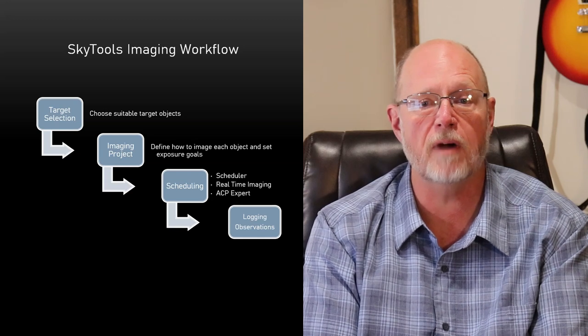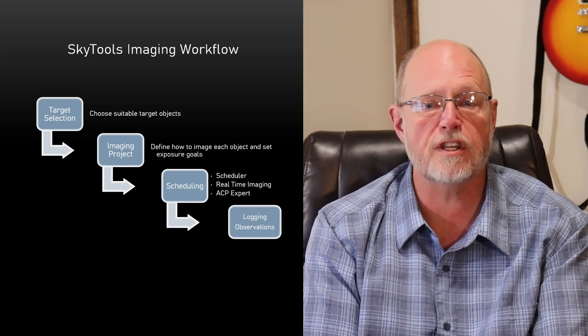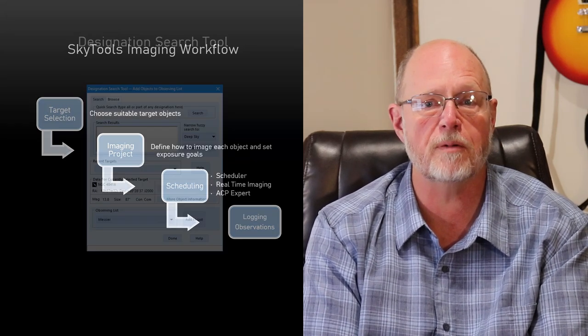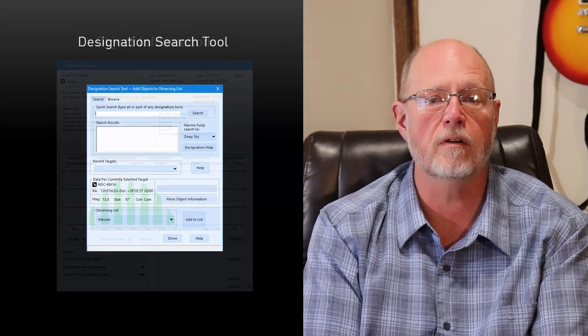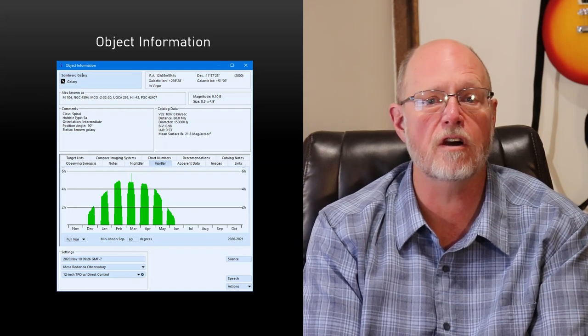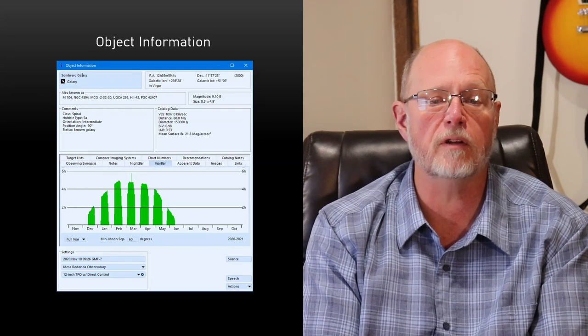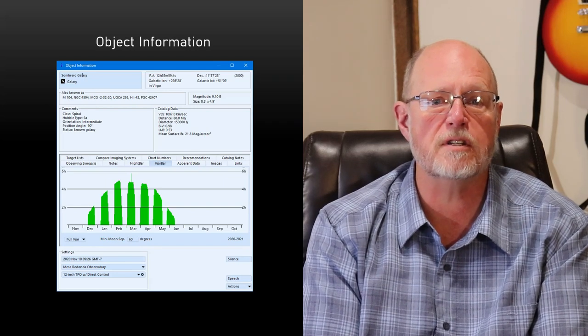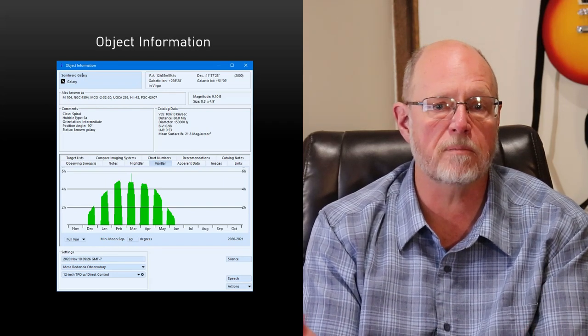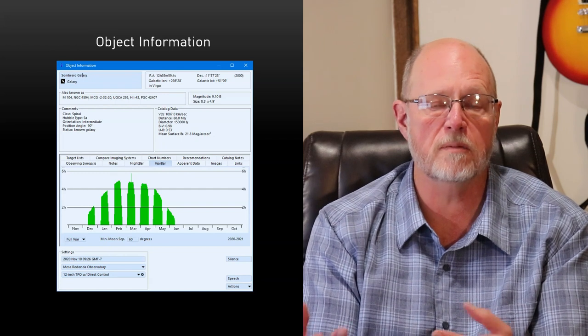You may already have a target in mind. In that case, you could use the designation search tool to look it up in the database, then open it in the object information window. This window pulls together everything you need to know to determine the suitability of that object. If you decide to image the target object, the next step is to create an imaging project.